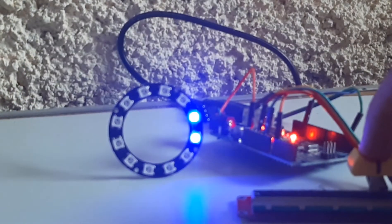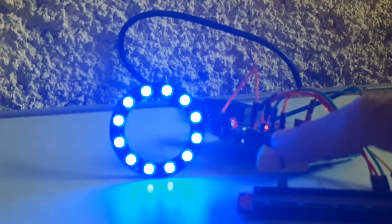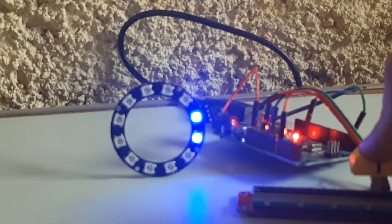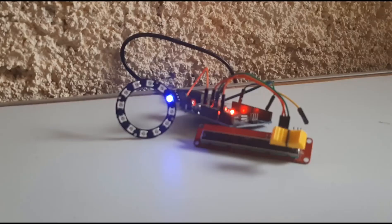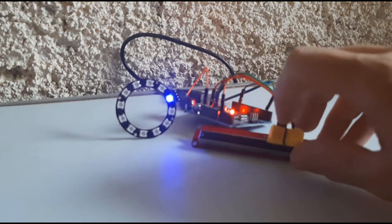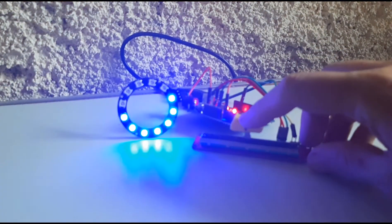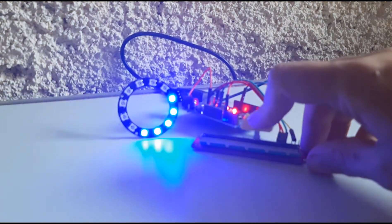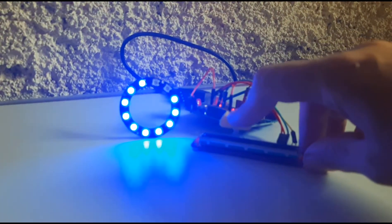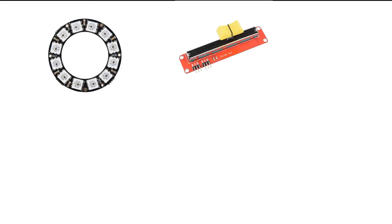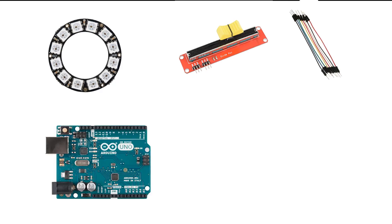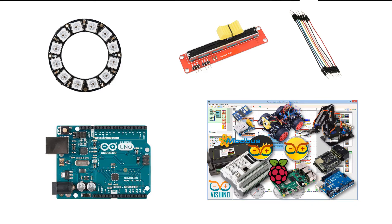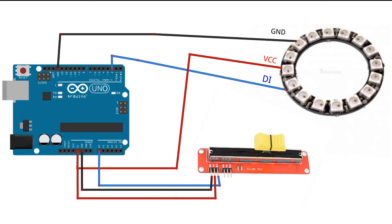In this tutorial we will learn how to make a volume indicator using a LED ring and Arduino. For this tutorial you will need a NeoPixel LED ring, a potentiometer, jumper wires, Arduino and Viswino software. Wire everything according to the schematic.